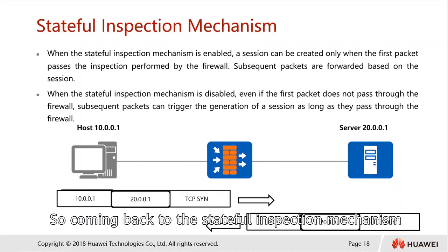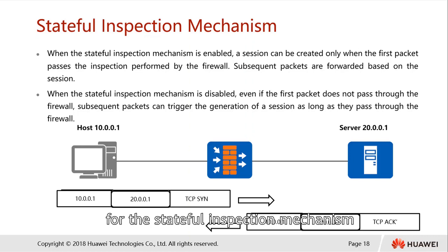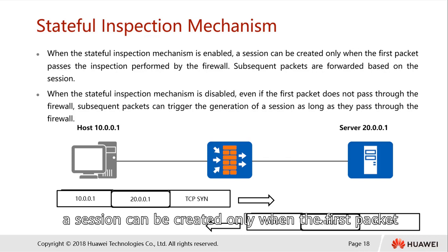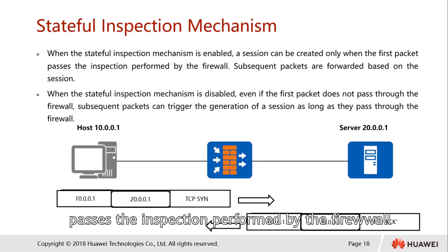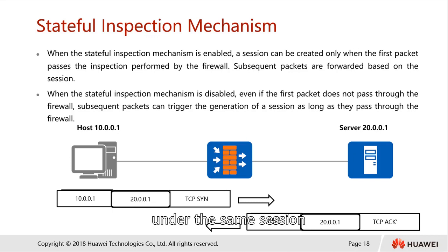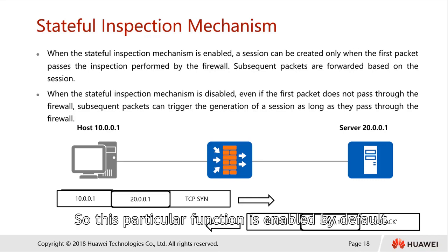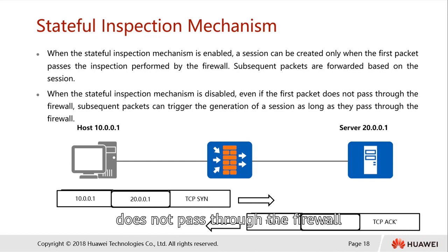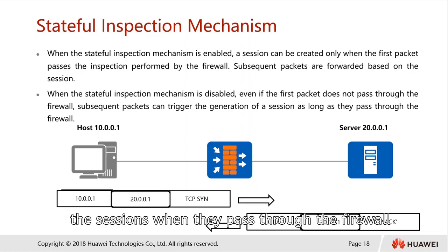Coming back to the stateful inspection mechanism, this mechanism is based on connection status. A session is raised only when the first packet passes inspection by the firewall, which is matched against our security policy. If any subsequent packets come in under the same session, they are forwarded without further checking. This function is enabled by default. If we disable the stateful inspection mechanism, even if the first packet does not pass the firewall, subsequent packets will also need to generate sessions when they pass the firewall.